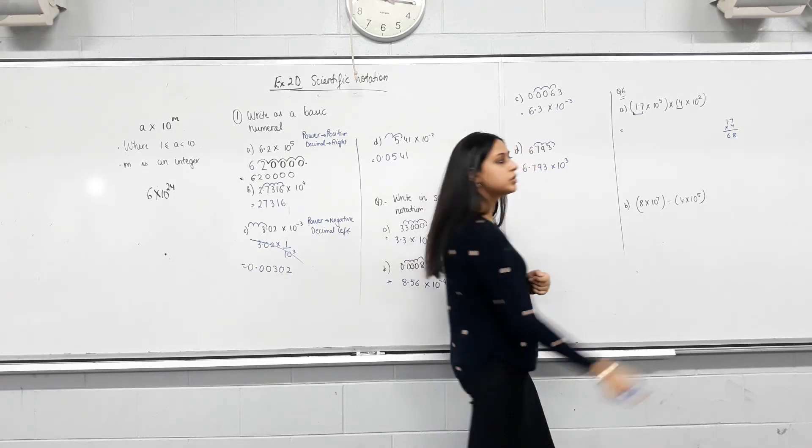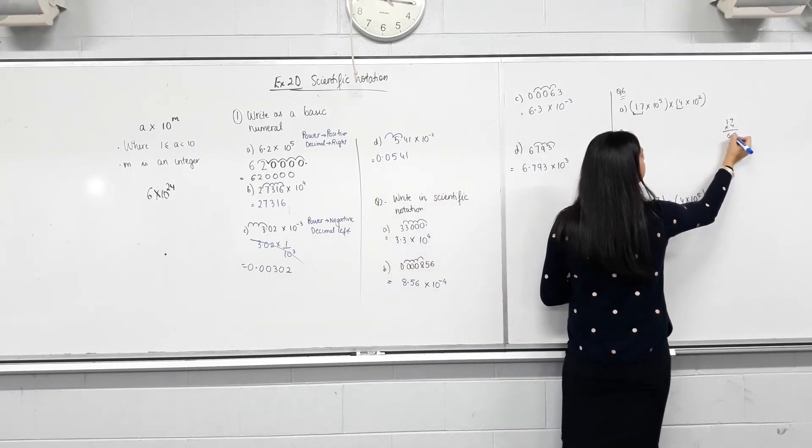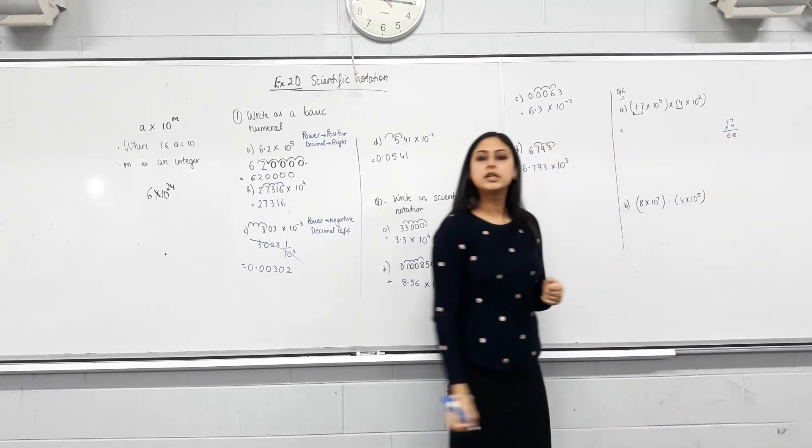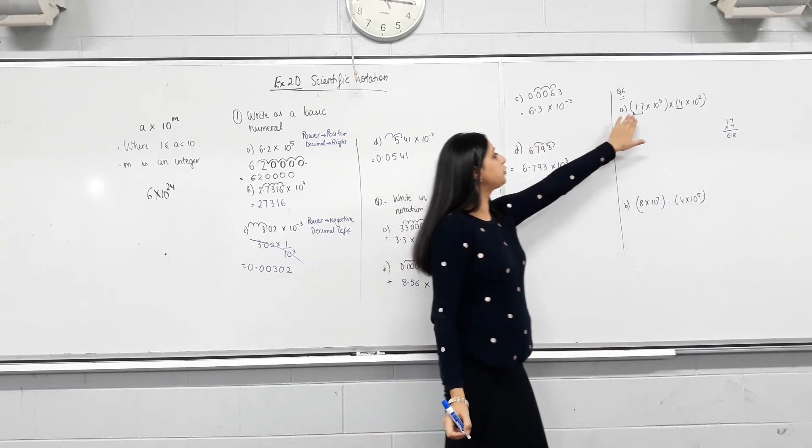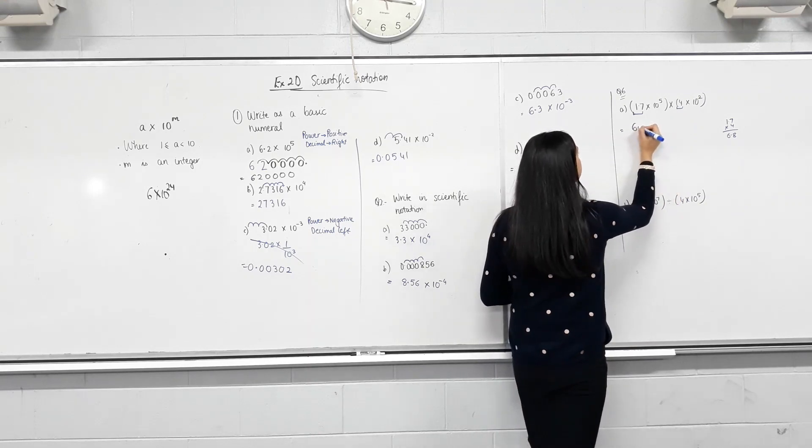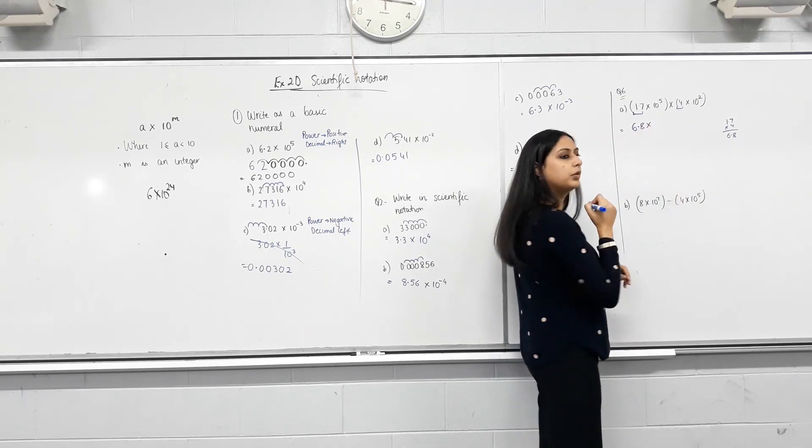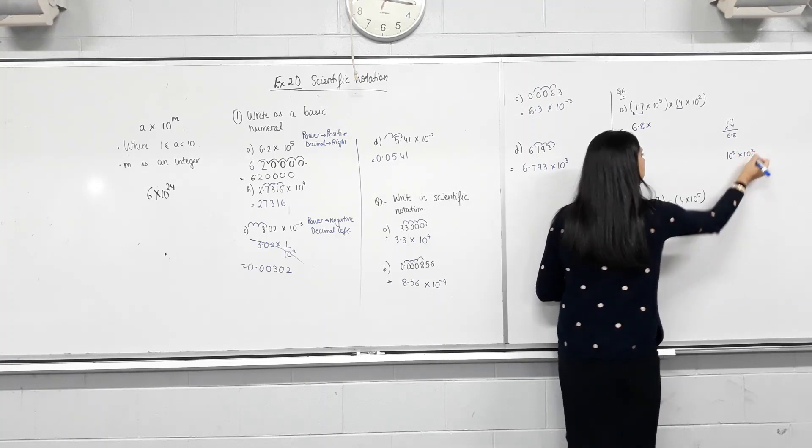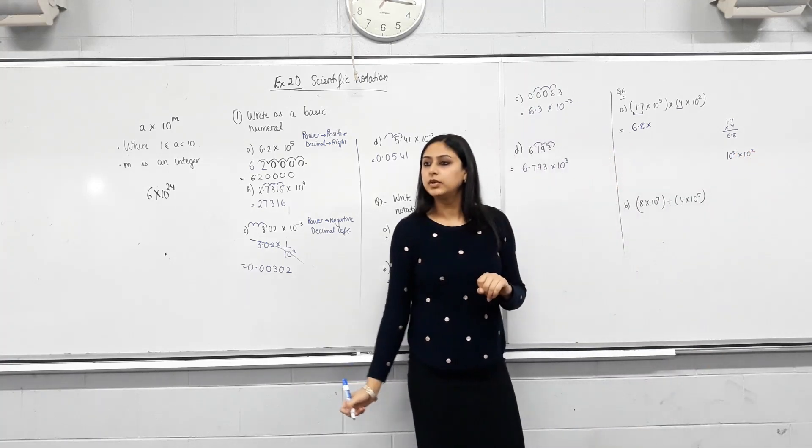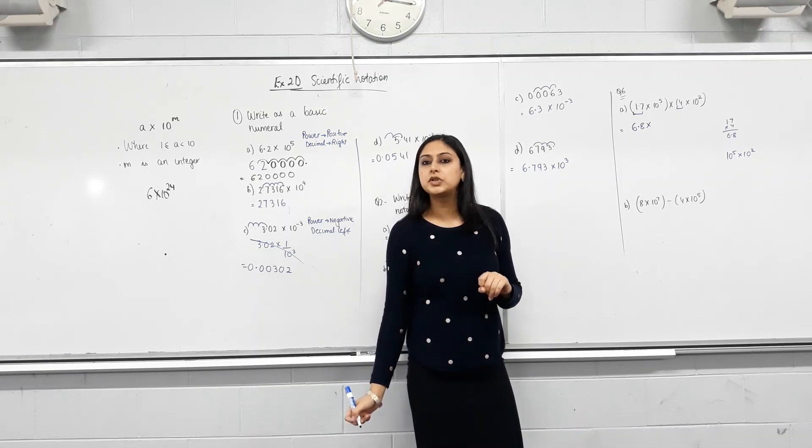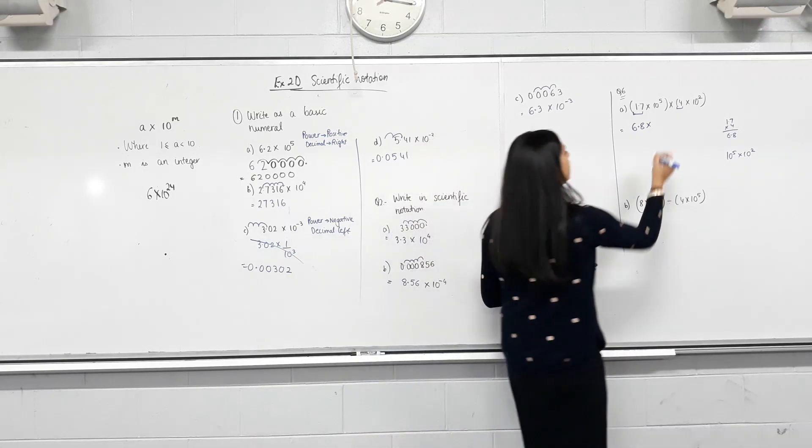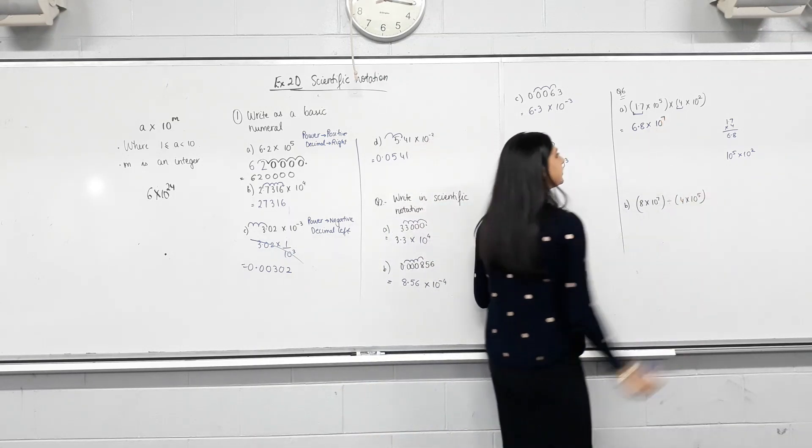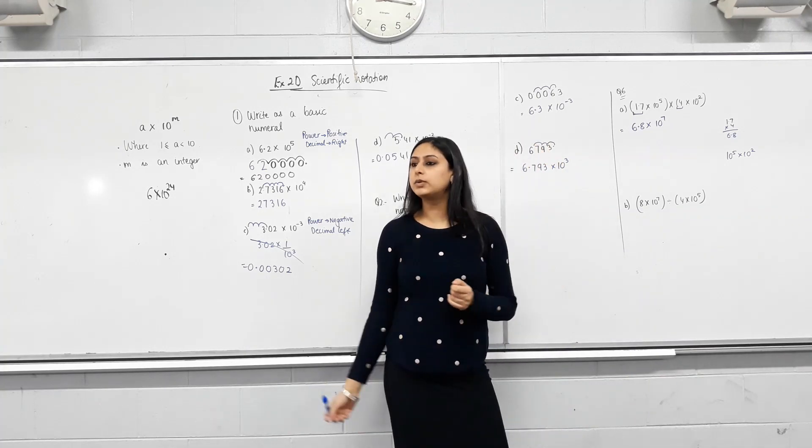Yes? So how many places were after the decimal? So it'll be 6.8. So times 1.7 with 4, which I get 6.8. Now, what happens when I times these? Bases are the same and they're being multiplied. What happens to the powers? Added. So can I write it as 10 to the power of 7? Yes. See how easily we did this question?